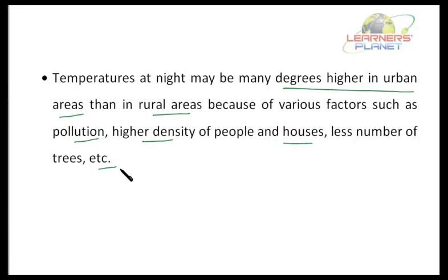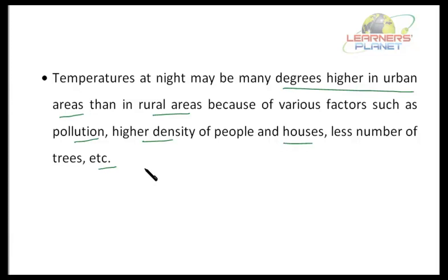Always remember that temperatures at night may be many degrees higher in urban areas than in rural areas, because of various factors such as pollution, higher density of people and houses, and fewer trees. In urban areas there is more industrialization, more construction of buildings, and more vehicles. Because of factors like deforestation — cutting of trees for commercial uses and building houses — urban areas show much higher temperatures. So these factors cause temperature variation in different areas, and temperature is one factor which influences the weather of a place.